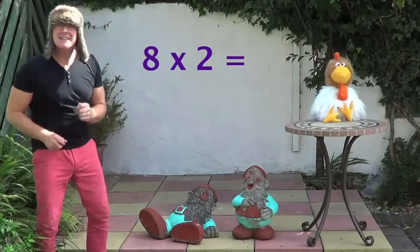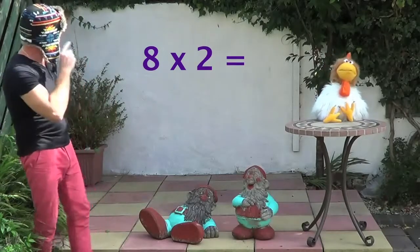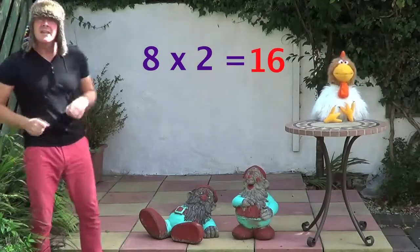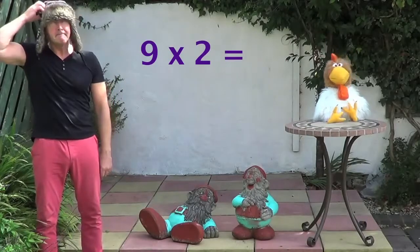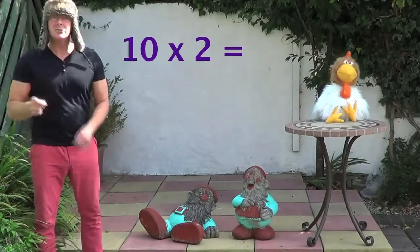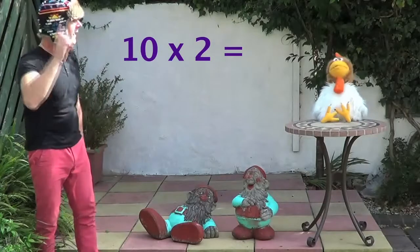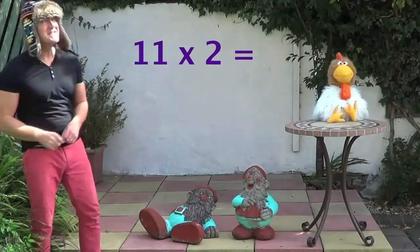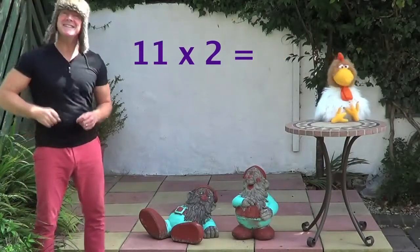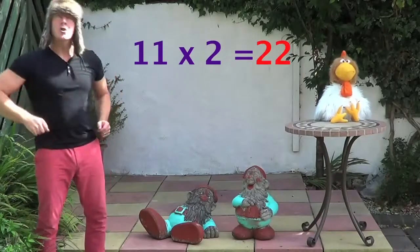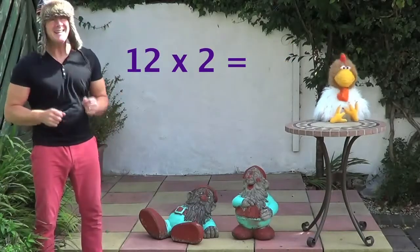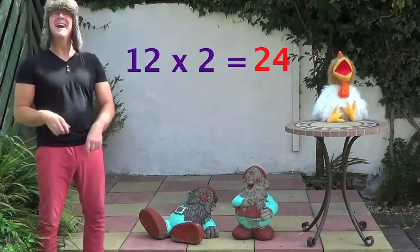Eight times two is... sixty. Nine times two is... eighty. Ten times two is... twenty. Eleven times two is... twenty-two. Twelve times two is... twenty-four.